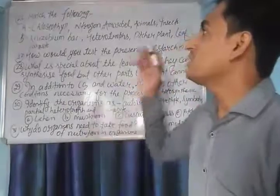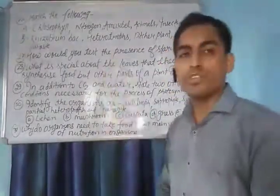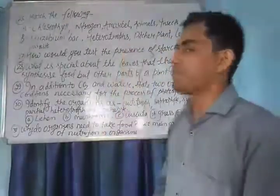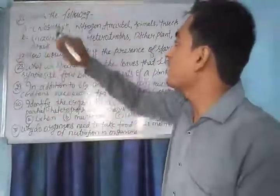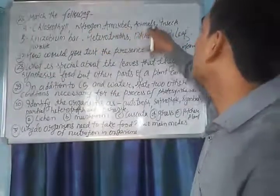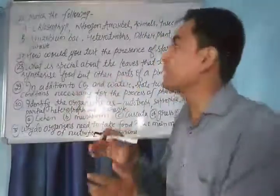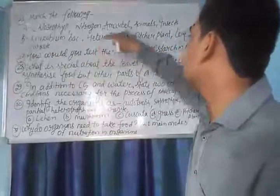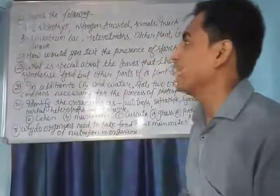These are the short questions and question number 26 is the first short question: Match the following. In column A it is mentioned chlorophyll, nitrogen, amarbale, animals, insects. In column B it is mentioned rhizobium, heterotrophs, pitcher plant, leaf and parasites. So let's come to match.